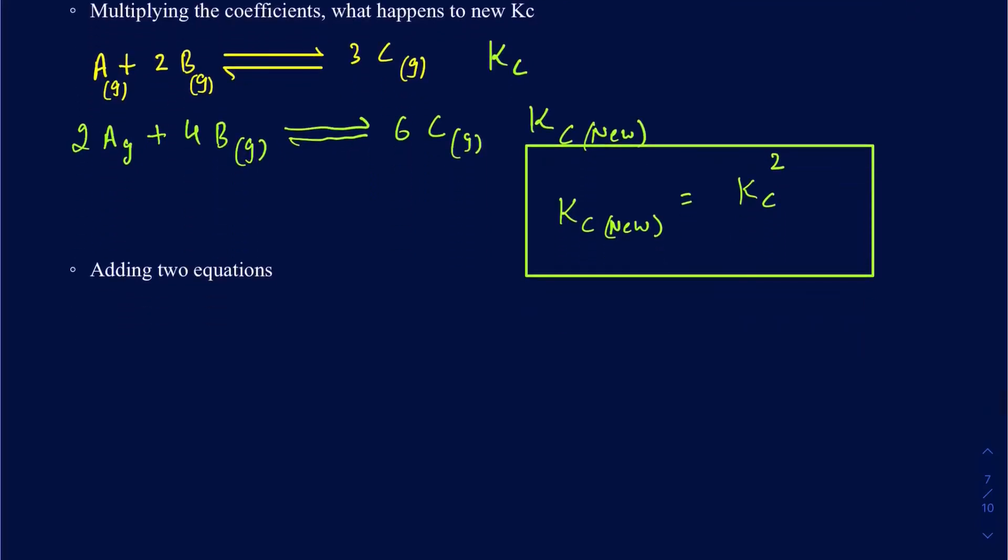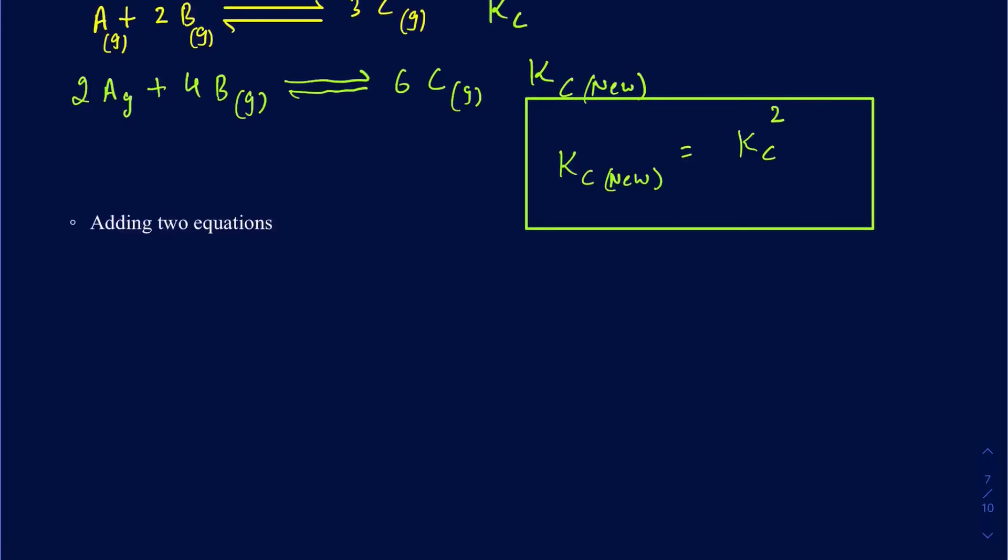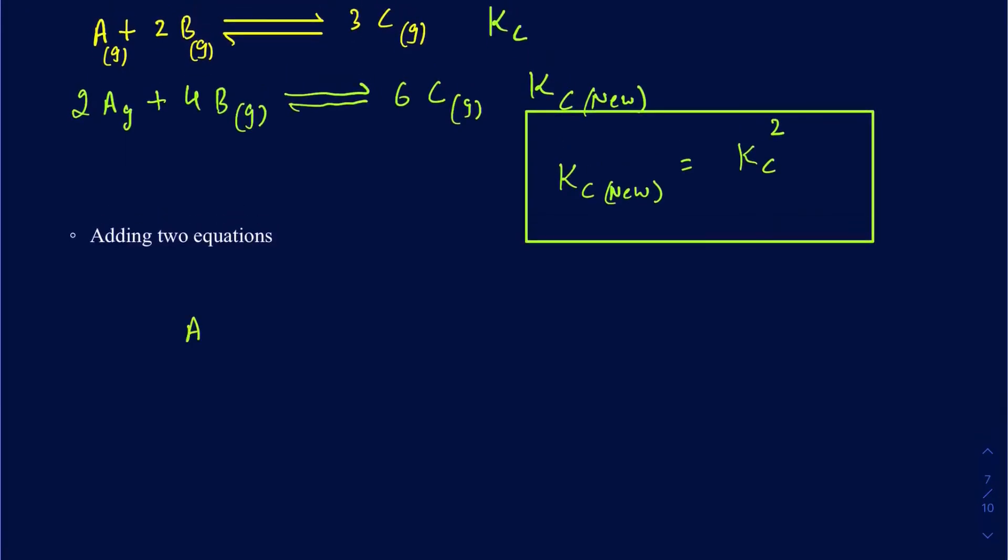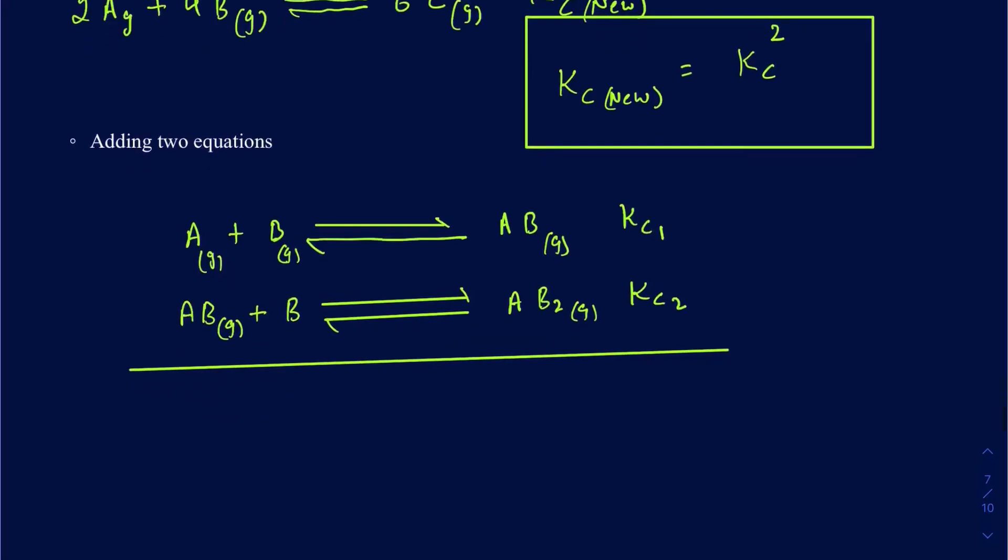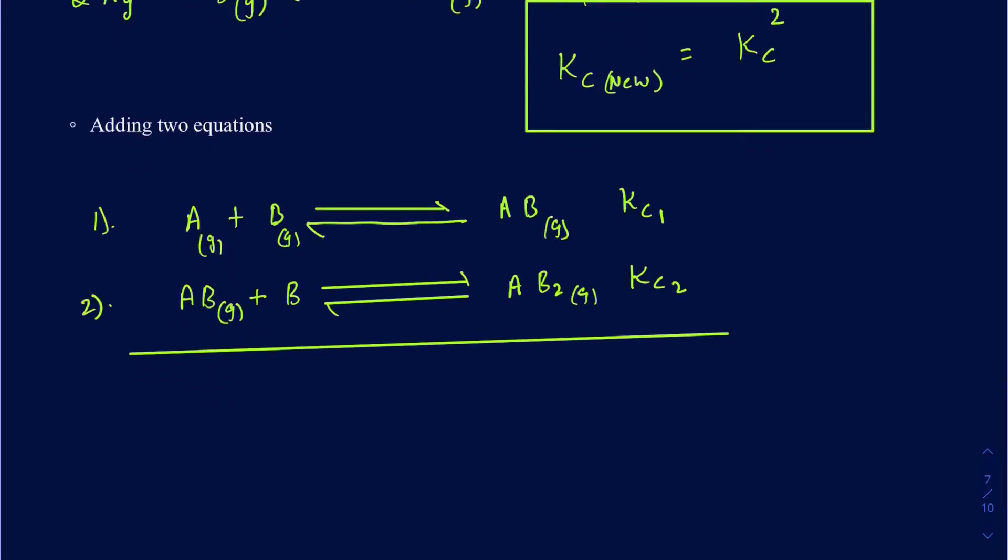Now, what happens, the last one is, what happens when you're adding two equations? So suppose I have one equation where I am getting A plus B, and that's going to be in equilibrium with AB. And I got Kc1 here for that particular one. And I'm just going to assume everything is in a gas phase here. And then I get another equation where I'm using the AB gas plus B, and that goes on to make an AB2 in the gas form. And this particular Kc is going to be Kc2. Now, if I go ahead and add these two reactions up, 1 and 2, so it's different than what you really see in Hess's Law.